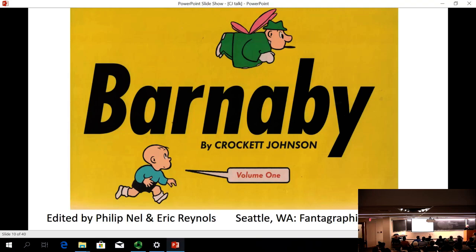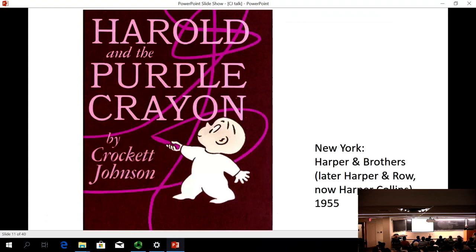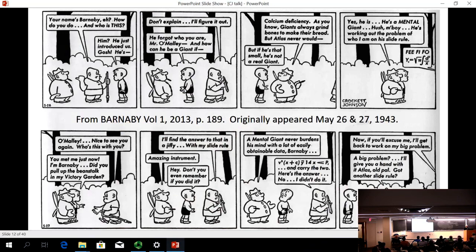The two main characters in the comic strip were Barnaby and his fairy godfather, Mr. O'Malley. Just over a year after starting the Barnaby strip, C.J. introduced Atlas, Mr. O'Malley's friend, whom he refers to as a mental giant. While Atlas was named for the mythical Atlas who carried the world on his shoulder, C.J.'s Atlas only had to carry a slide rule, which is the stick that is next to him that's almost as tall as he is.